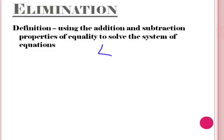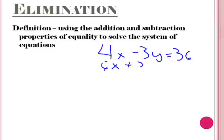Here's an example problem: 4x minus 3y equals 36, plus 6x plus 3y equals 14.